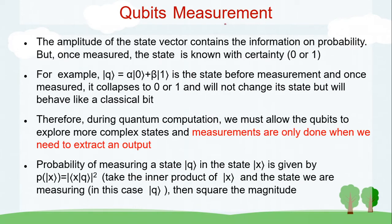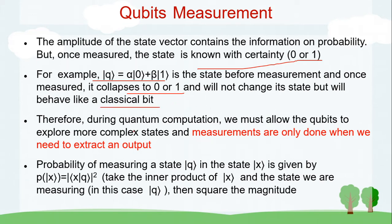Qubit measurement is important — we don't need to worry about how it is physically measured, only what happens at the time of measurement. The amplitude of the state vector contains probability information, but once measured the state is known with certainty — either zero or one, just like a classical bit. Once measured, the qubit collapses to that state and no longer exhibits superposition or entanglement; it behaves like a classical bit.